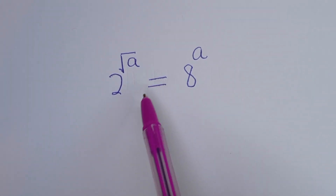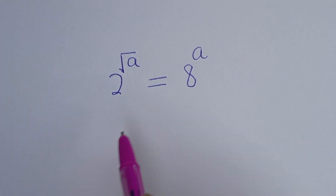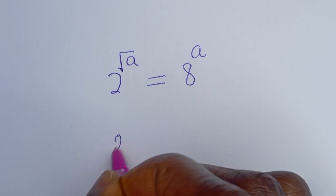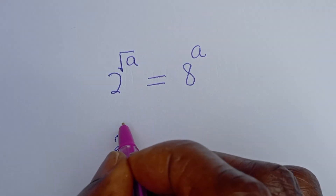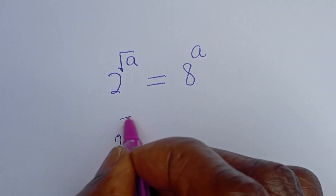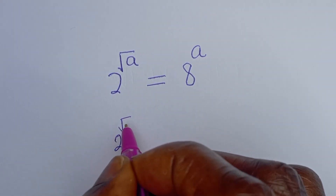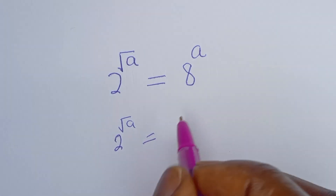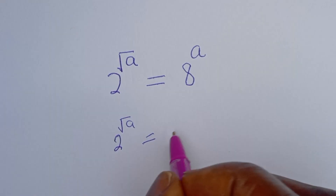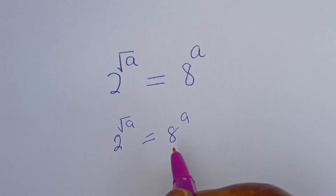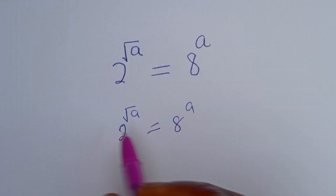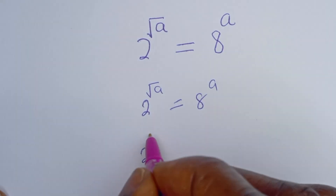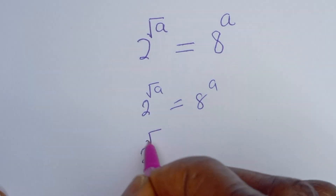I know how to solve for a in this equation. We have 2 to the power of square root of a will be equal to a to the power of a. Then this is 2 to the power of square root of a.